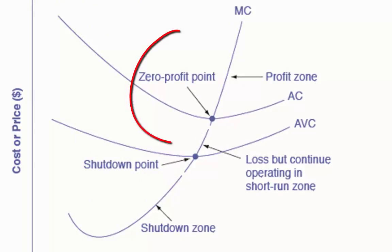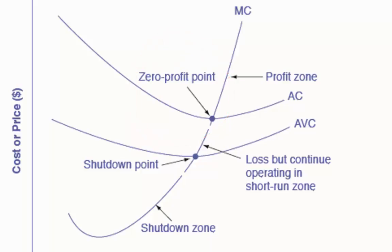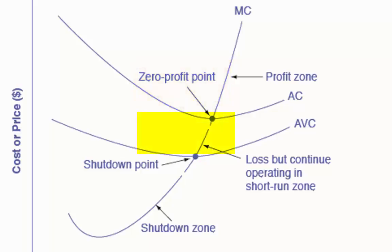The point where marginal cost crosses average cost is called the zero profit point. If the firm is operating at a level of output where the market price is higher than the zero profit point, then the price will be greater than the average cost and the firm is earning profits. If the price is exactly at the zero profit line, then the firm is making zero profits or breaking even. If the price falls in the zone between the shutdown point and the zero profit point, then the firm is making losses but will continue to operate in the short run since it is covering its variable costs — in this case, it is minimizing its losses. However, if price falls below the shutdown point, then the firm will shut down immediately, since it is not even covering its variable costs.